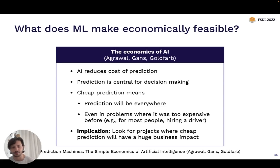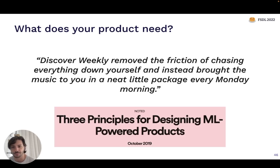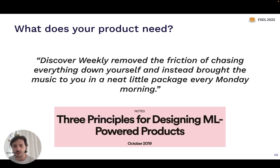Another mental model is thinking about what your product needs. I really like an article called 'Three Principles for Designing ML-Powered Products' from Spotify. They discussed the principles used to develop the Discover Weekly feature, which is one of the most powerful features of Spotify. The way they thought about it is: it reduces friction for users — reducing the friction of chasing everything down yourself and just bringing everything in a neat little package. That makes their product a lot better. So that's another easy way to come up with ideas for machine learning projects.